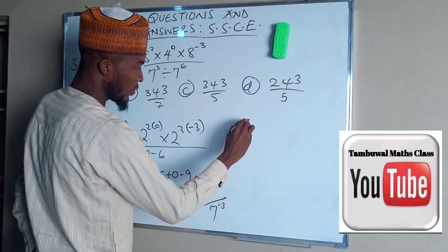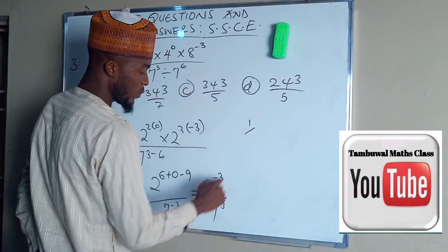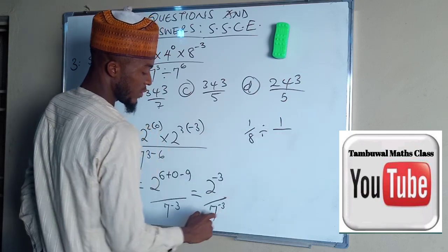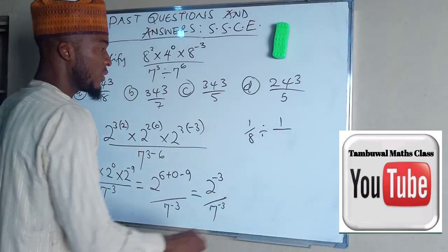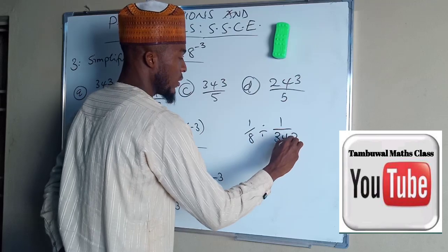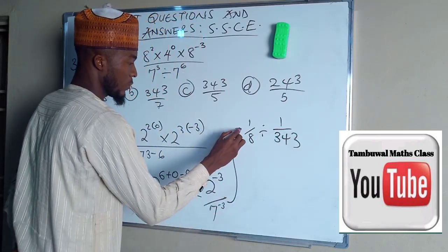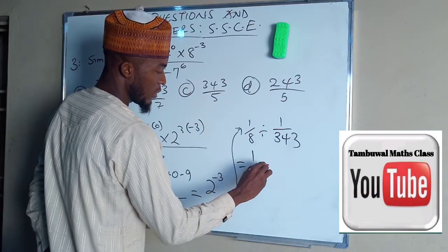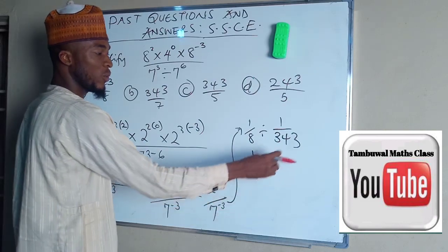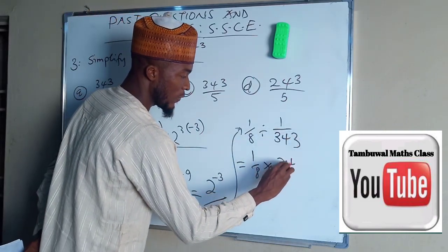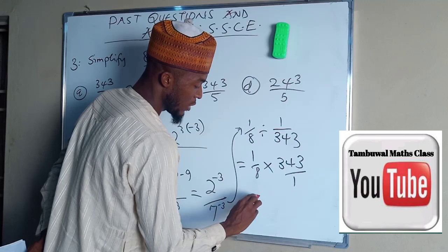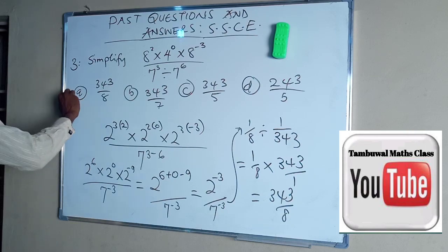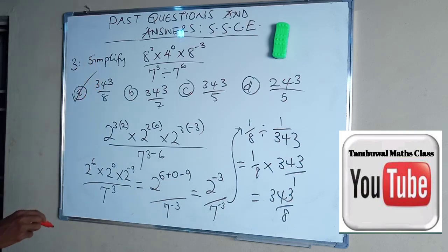If you simplify this, you are going to get 1 all over 2 power 3, which is 8, divided by 1 divided by 7 power 3, which is 343. And again, 1 over 8 multiplied by 343 divided by 8, which is the first option.